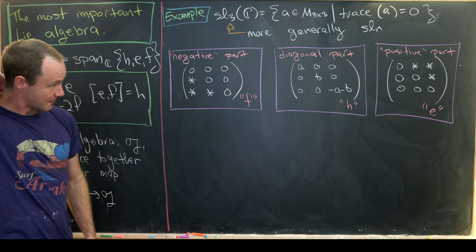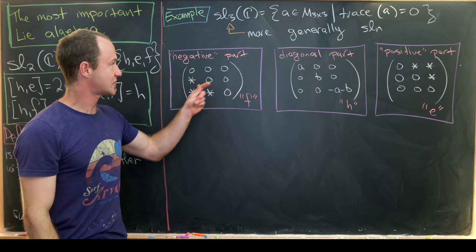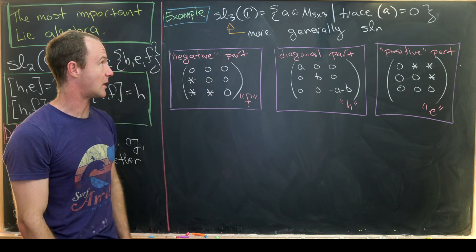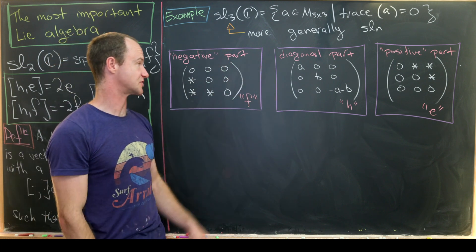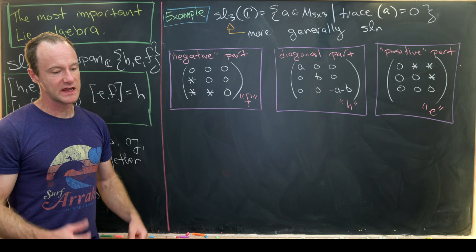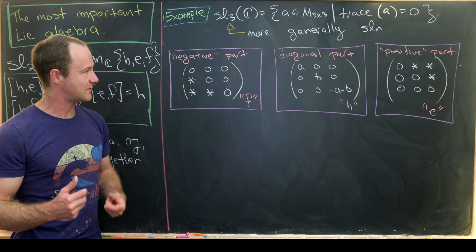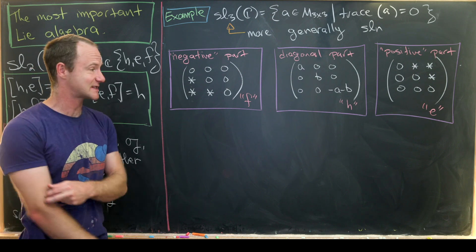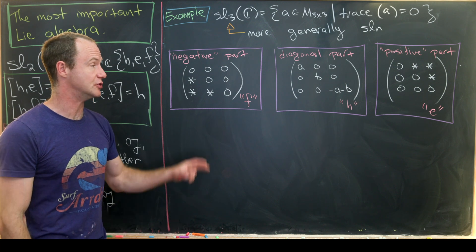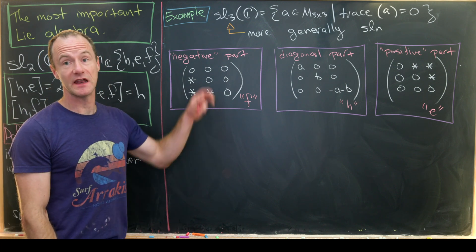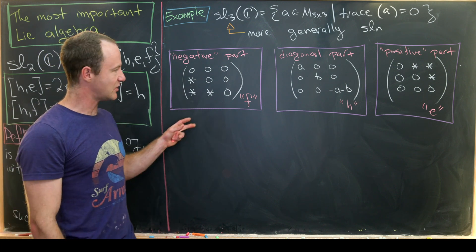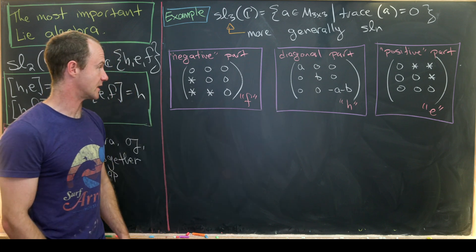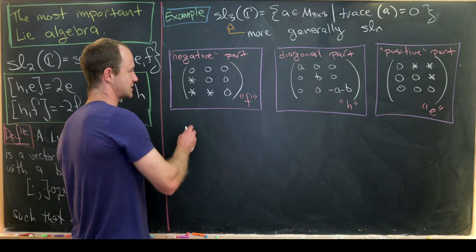Now that we've got this picture of the negative, diagonal, and positive parts of SL3, we can find three distinct copies of SL2 within SL3. Let's write the representing matrices out. In each row we'll list a choice of f, h, and e for a copy of SL2.